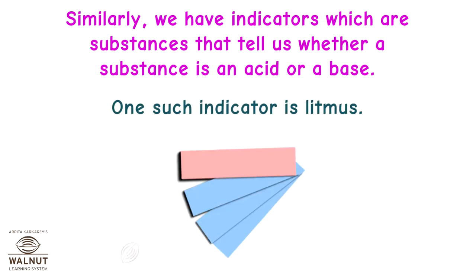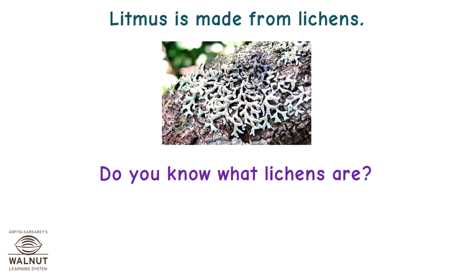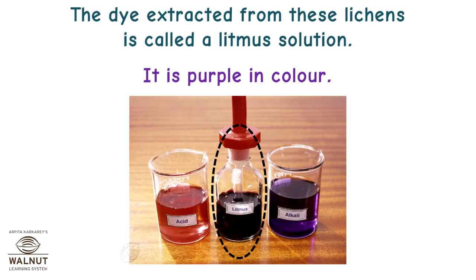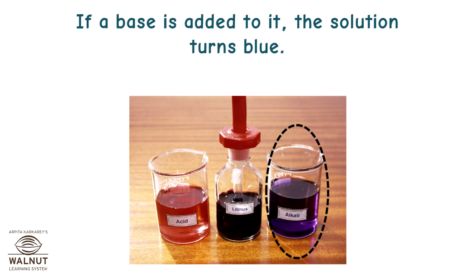One such indicator is litmus. Litmus is made from lichens. Do you know what lichens are? When a certain algae and a fungi come together, they form a lichen. The dye extracted from these lichens is called a litmus solution, and it is purple in colour. If an acid is added to it, the solution turns red, and if a base is added to it, the solution turns blue.